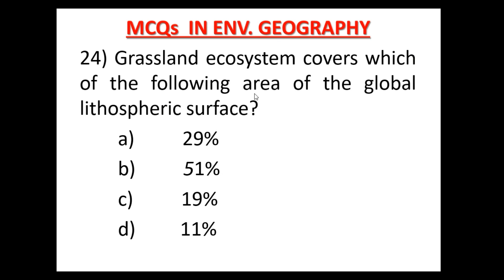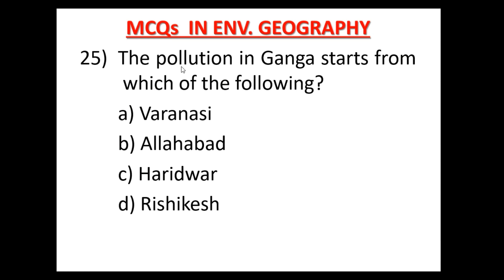Question number 24: Grassland Ecosystem covers which of the following percentage of the Global Lithospheric Surface? संपूर्ण Globe के स्थलीय भाग का कितना प्रतिशत Grassland Ecosystem cover करता है? Option A: 29%, Option B: 51%, Option C: 19%, Option D: 11%. Grassland Ecosystem covers 19% of the Global Lithospheric Surface. Option C is the correct answer.